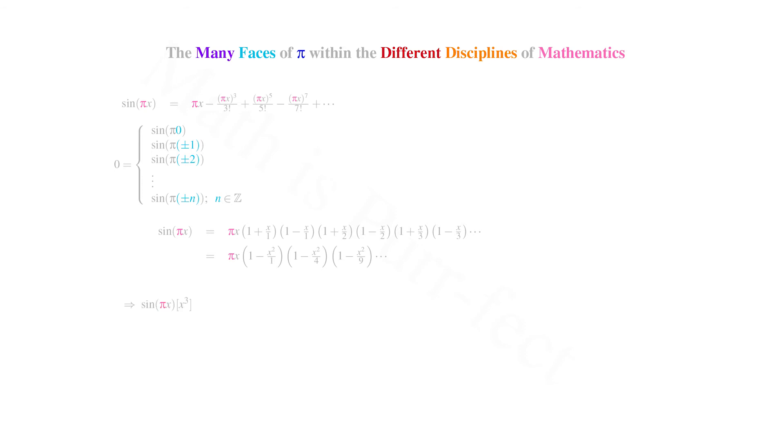Now let's consider the coefficient of x cubed in this expression. If we distribute pi x to the minus x squared over 1 inside the first parenthetical term, the coefficient is minus pi times 1 over 1. We could also distribute pi x to the negative x squared over 4 inside the second set of parentheses, giving us a coefficient of negative pi times 1 over 4. Continuing in this manner, that is, to distribute pi x to the second term inside each parenthetical remark, gives us a coefficient of 1 over n squared.